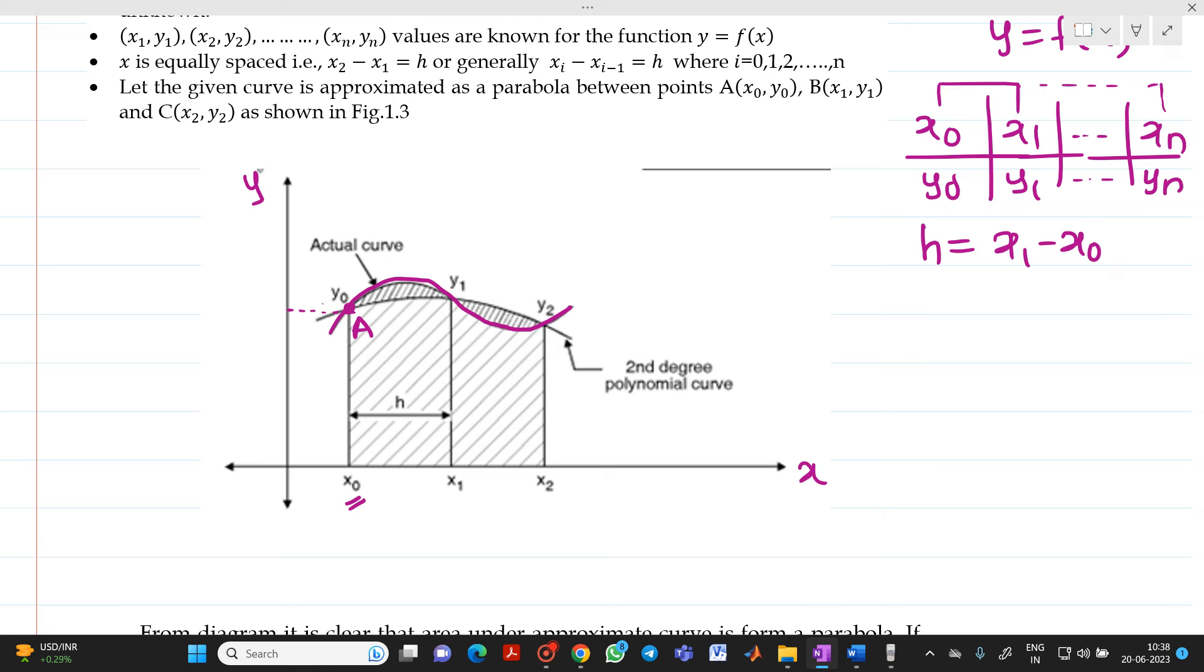Let us consider another point B with x1 and y1. So, this will be x1, this will be your y1. So, this is y0, this will be your y1. And here, you will get point C with the coordinates x2, y2. So, here if you see, we will get a second degree polynomial curve here.